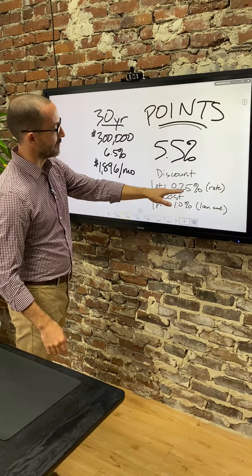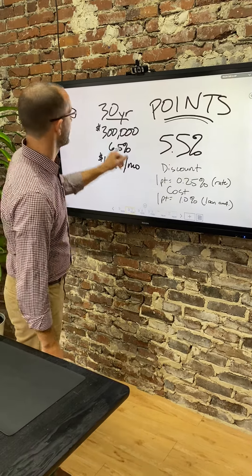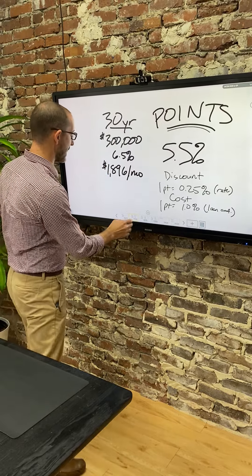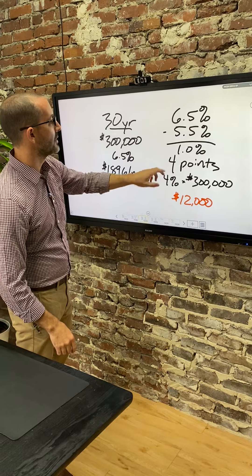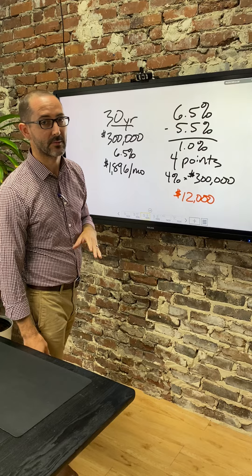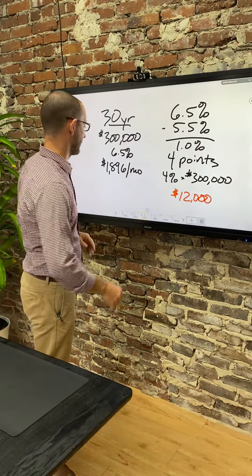One point is 0.25% off of the rate, and it costs you 1% of the loan amount. I know I'm throwing a lot of numbers at you, just bear with me. Basically, if you want to get your rate down a full percentage point, you need to buy four points. So for this particular loan, it would cost you $12,000. I know that's a lot of money, but wait, there's more.